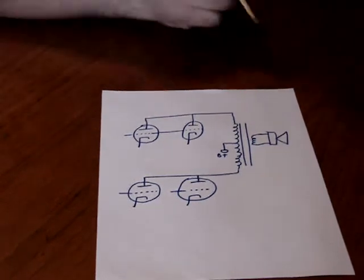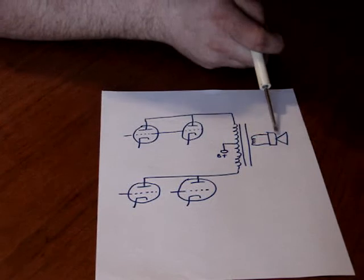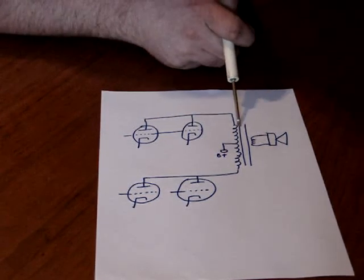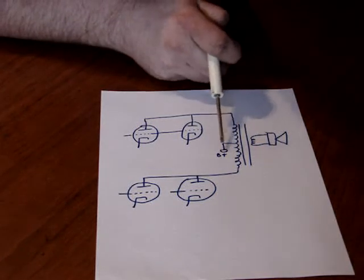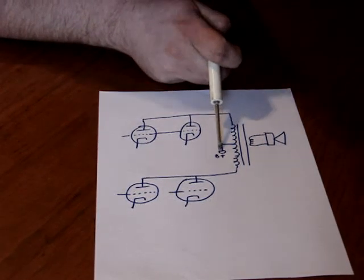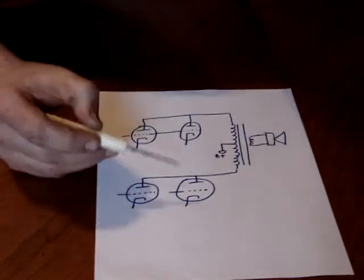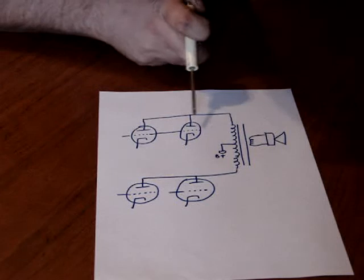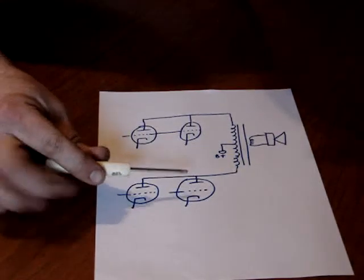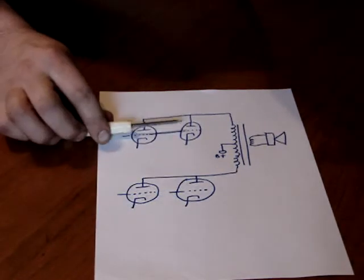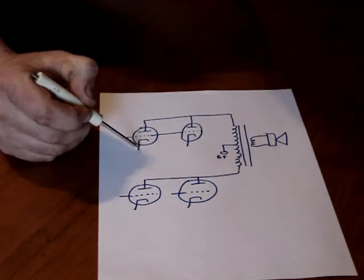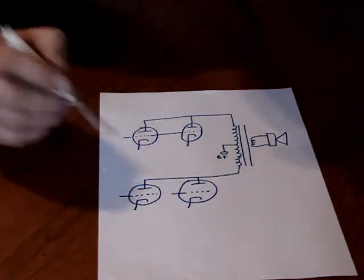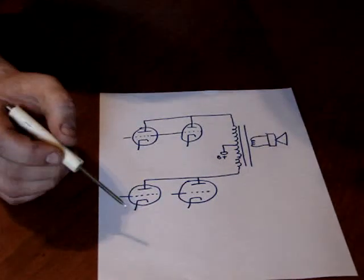This is push-pull parallel. You have the basic same output where you have an 8-ohm speaker with an 8-ohm winding and an output transformer, the center tap of which is connected to your B-plus supply, high voltage. But now, instead of just having one tube connected to each end of the transformer, we have two which are connected in parallel. The grids are tied together. The cathodes are normally tied together through the circuitry with a resistor and a capacitor to ground like in the other drawing. That's not important in this part, though.